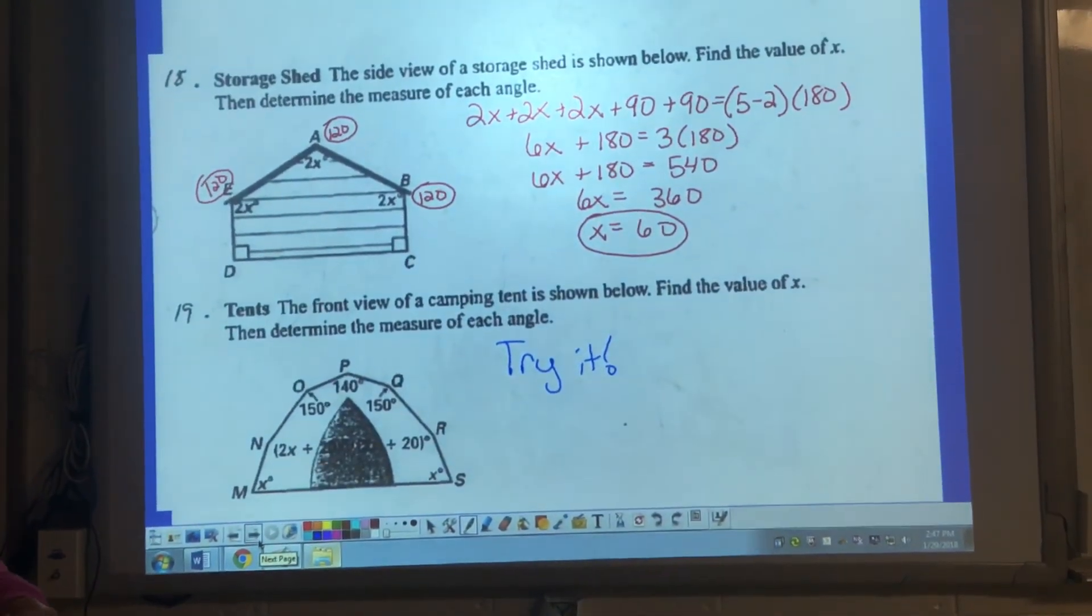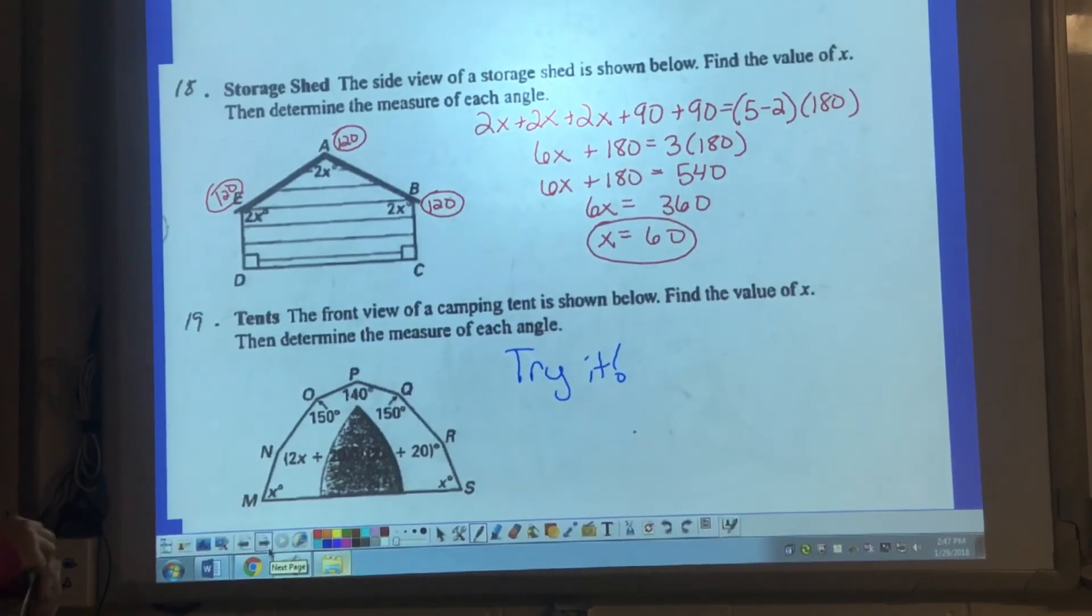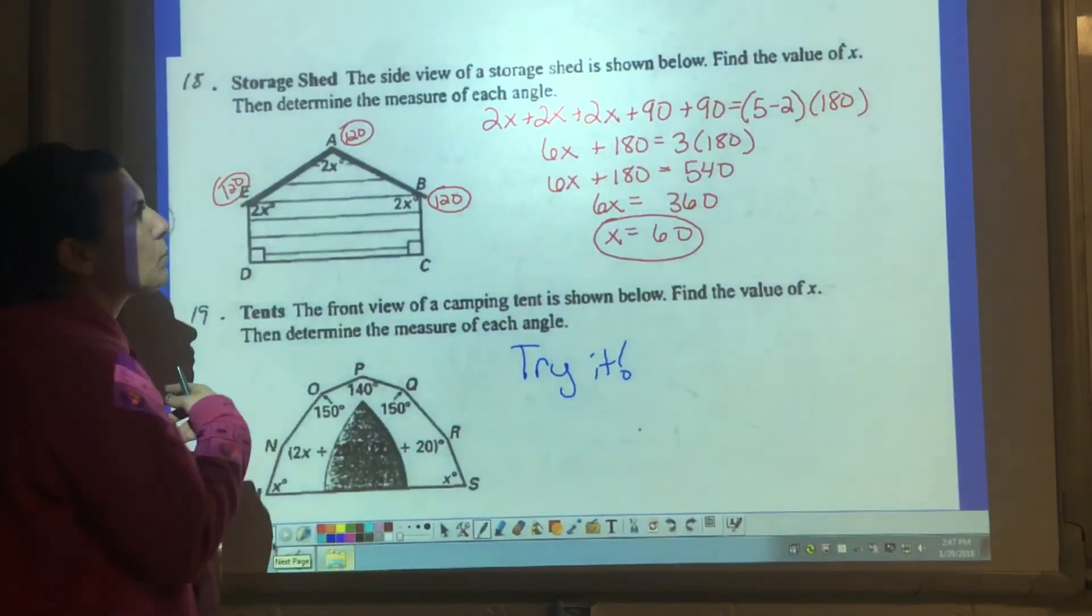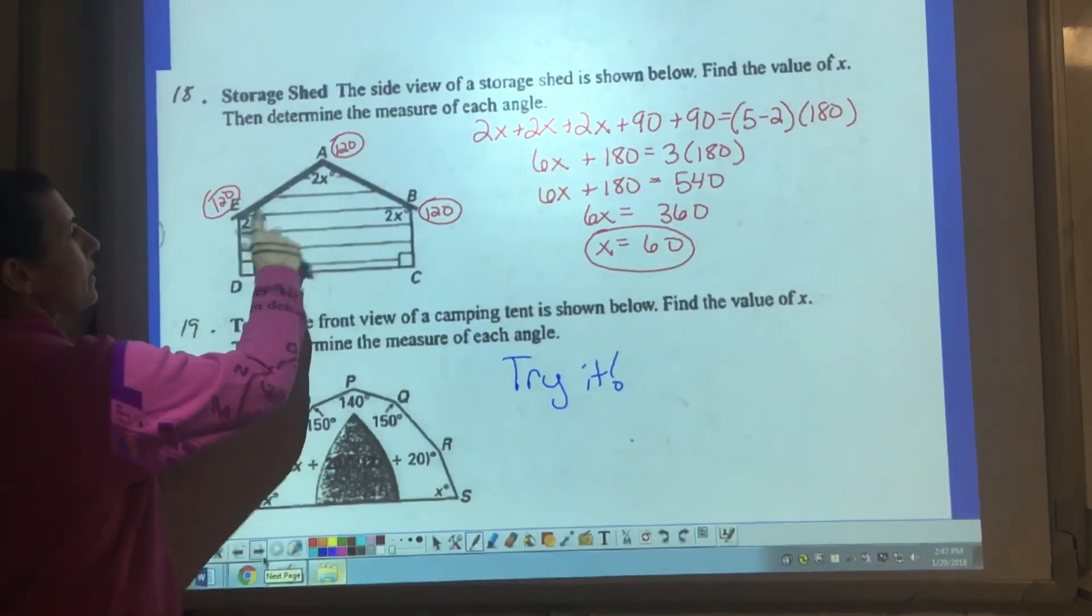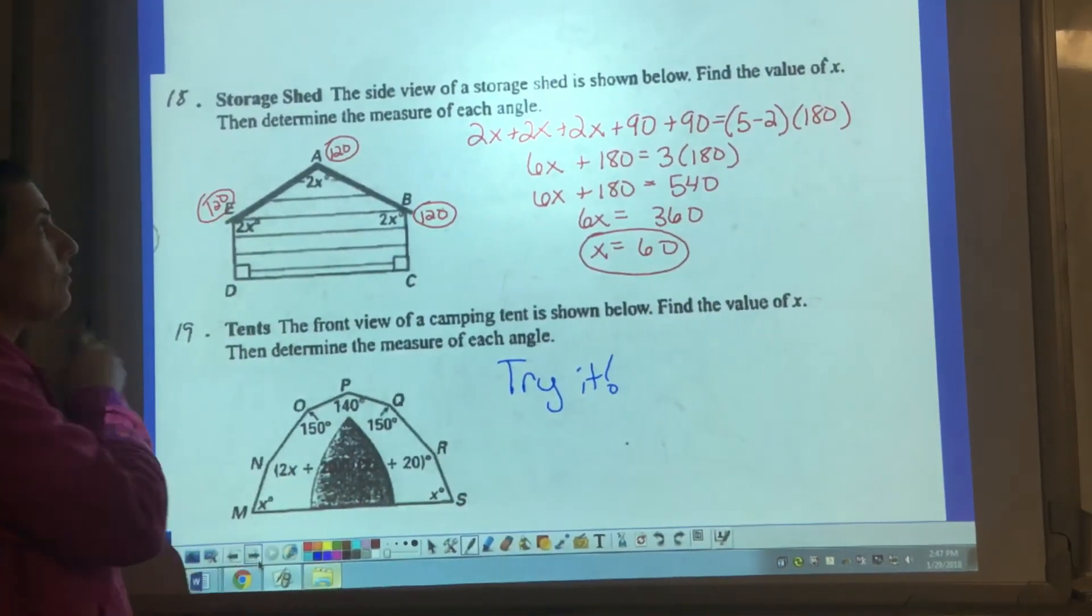Number 18 and 19, these are word problems. I solved this one for you just very quickly, similar to the last problems. So they're showing us the angles of this storage shed.